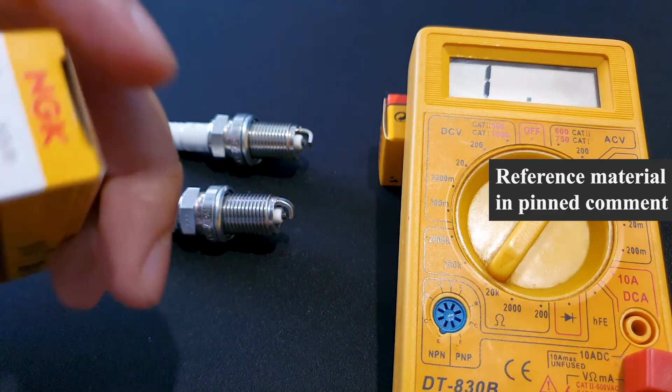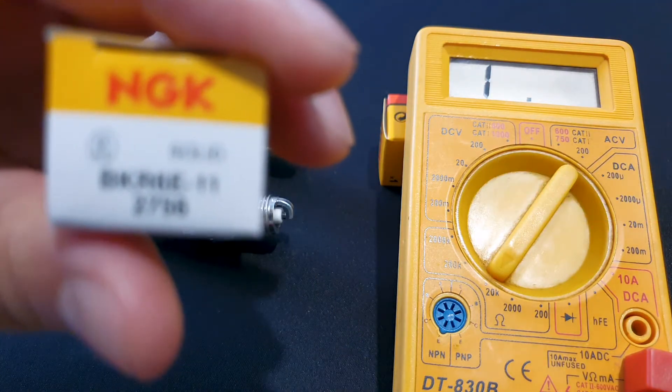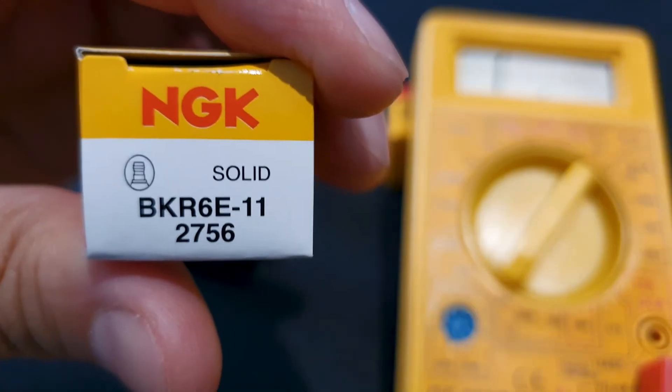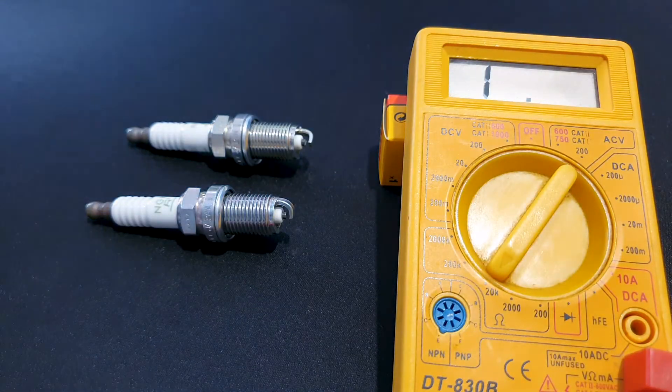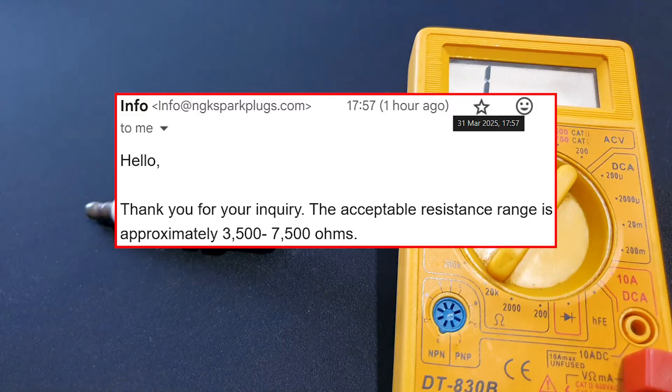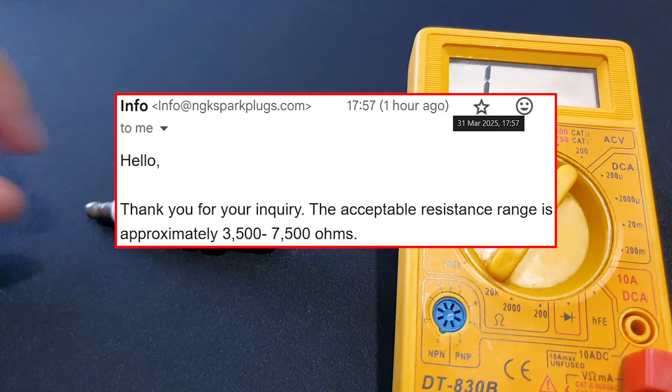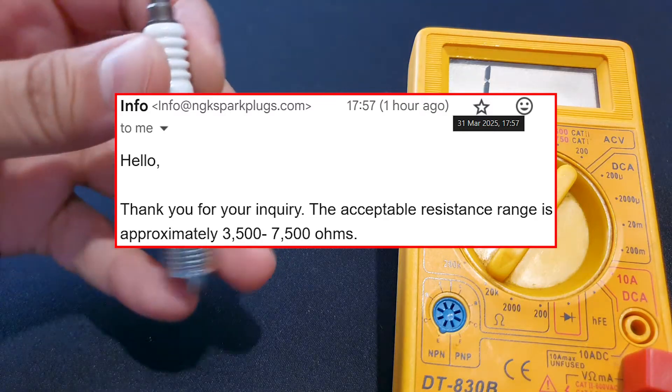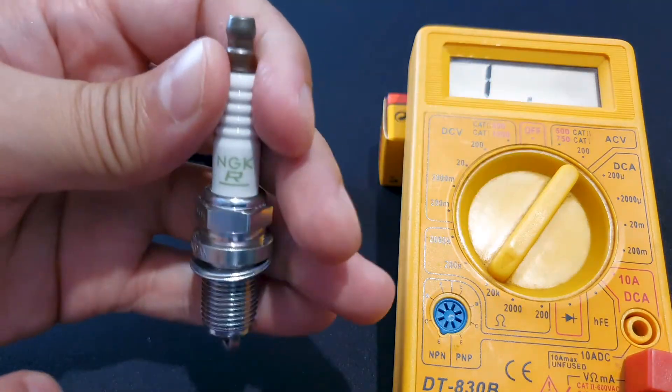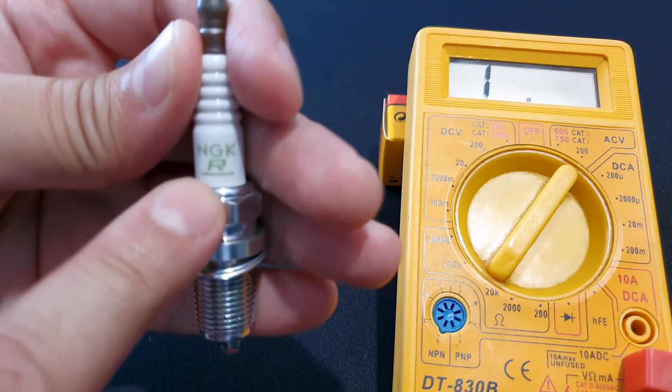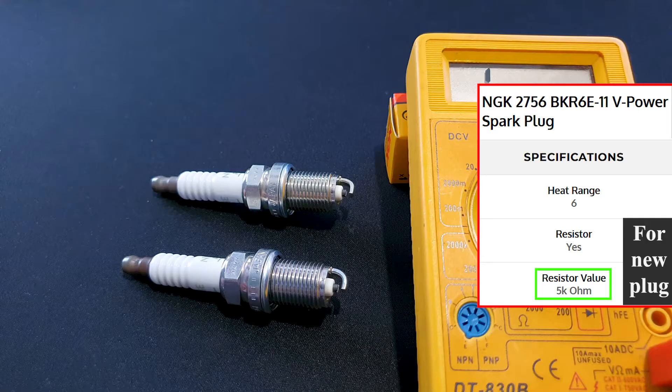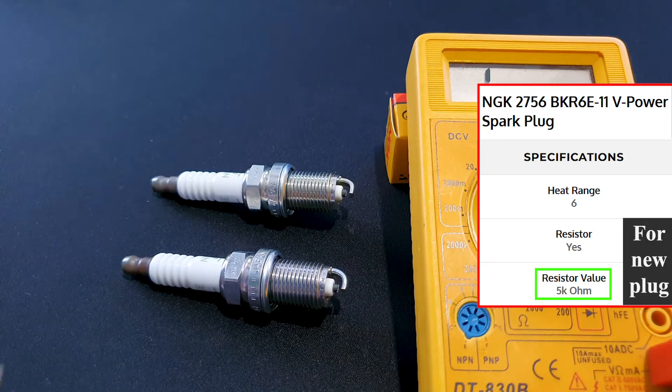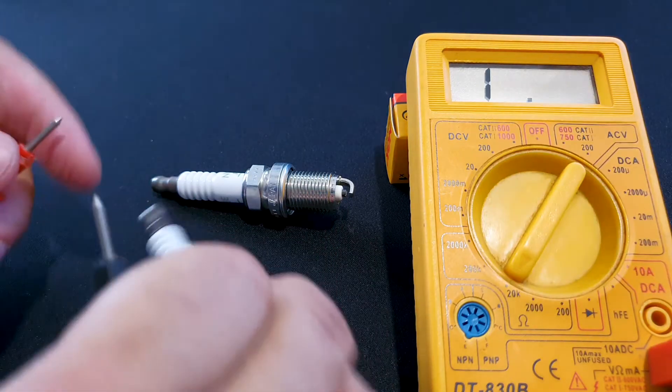Here I have a genuine NGK spark plug. You can see the part number. The 'R' that you see means this is a resistor type of plug. I asked NGK about this, where they say the acceptable range for these type of plugs are 3,500 to 7,500 ohms. On the NGK website, you can see the resistor value for this spark plug is at 5,000 ohms. So let's test this.